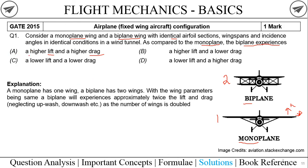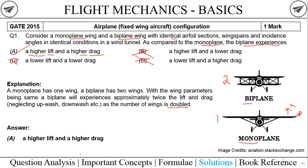Looking at the options: option A discusses higher lift and higher drag — this must be the correct answer. Option B mentions higher lift and lower drag — this is impossible. Option C says lower lift and lower drag — also not possible, as both lift and drag get doubled. Option D mentions lower lift and higher drag — also not possible since all conditions are the same. We are left with option A as the right answer.